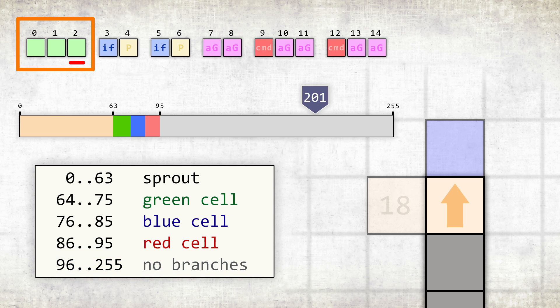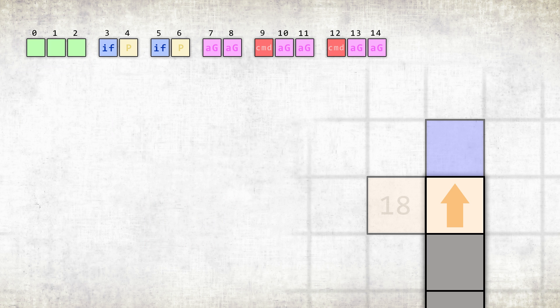After that, the cell checks whether it has enough energy to create all these branches, and if there is enough energy, then new cells are created. Otherwise, we wait for the next move and save energy.